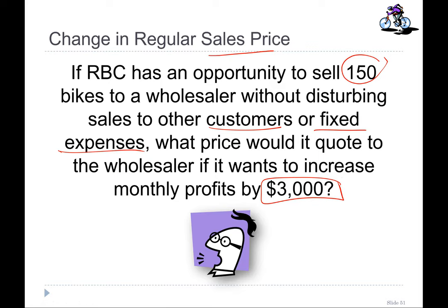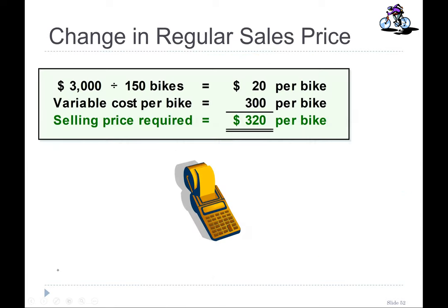How much profit per unit does he want to charge? The answer is 20 per unit — it's 150 bikes, so that's 20, right? The question itself says fixed expenses are not going to be disturbed, which means we are not going to allocate any fixed cost here.